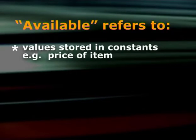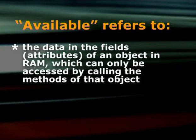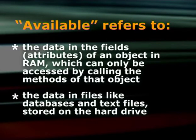Available means all data needed by the event that will not be input by the user. Available can refer to local or non-local values and the data in files, including: values stored in constants, for example the fixed price of an item; values stored in non-local variables or arrays by processing from another event, for example program start or open event; the data in fields or attributes of an object in RAM, accessible by calling the methods of that object; and data in files like databases and text files on the hard drive. Values stored in local variables are not mentioned because those are the variables used for input, output, and processing during the event — they will be shown in the appropriate column.